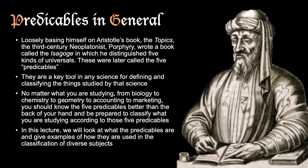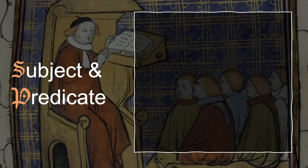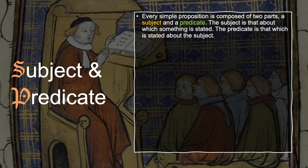In this lecture, we will look at what the Predicables are and give examples of how they are used in classification within diverse sciences. Every simple proposition is composed of two parts: a subject and a predicate. The subject is that about which something is stated. We either affirm something of something or we negate something of something. The predicate is that which is being affirmed or negated—it's what is stated about the subject.